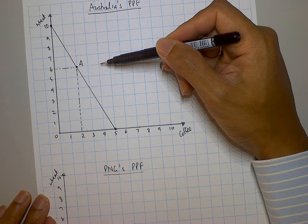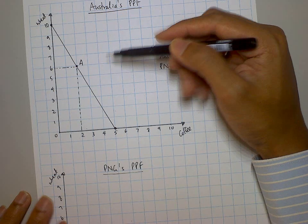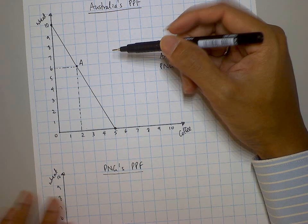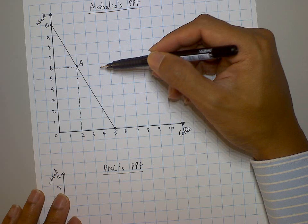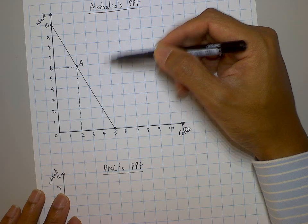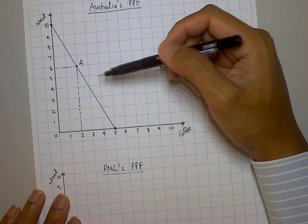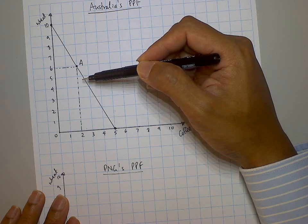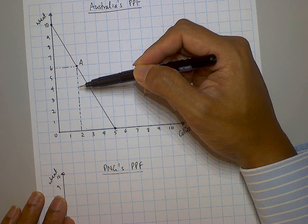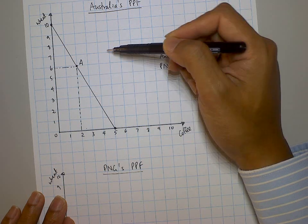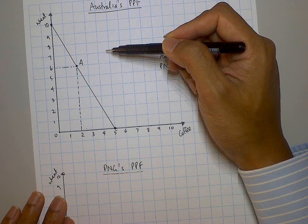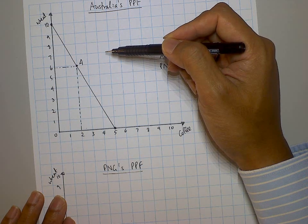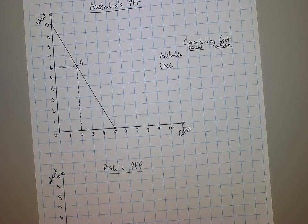Is it possible for a country to be outside of the PPF? You've learned the answer is no — but you will now learn that you can end up outside the PPF through trade. If the country is a closed economy, you can't end up outside the PPF. When we trade, we can, and that's one of the benefits of trade.